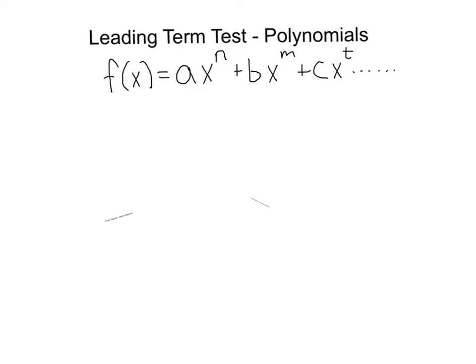An important part of graphing these is the leading term test. This leading term test is basically the same thing as we've done with monomials. The leading term is usually the front, but it's really just the term with the biggest degree — so N has to be bigger than M and T. After you focus on the leading term, you're just looking at whether the A term is positive or negative and whether the degree is even or odd.